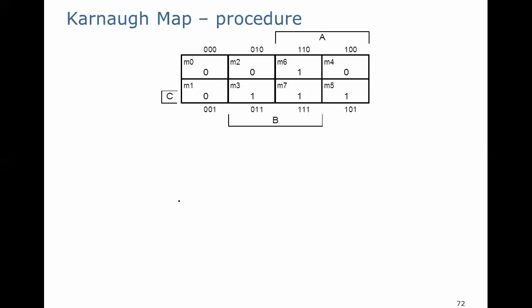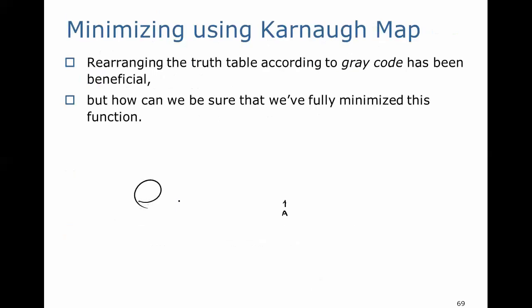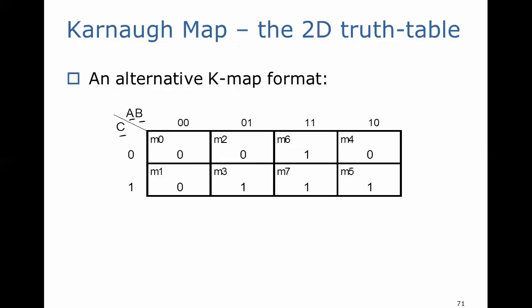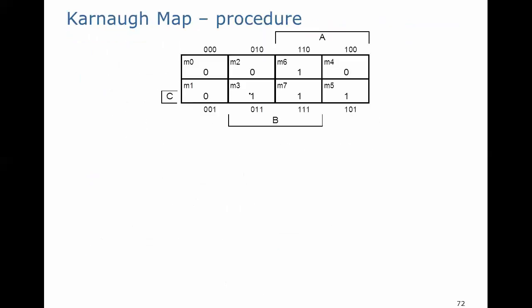Now let's work through this for our particular example. The truth table for this majority vote taker has four true entries: M3, M5, M6, and M7. So we're going to put 1s in the 3, 5, 6, and 7 cells and 0s in the rest. This is really just a truth table laid out in 2D rather than 1D. The key property is that all adjacent cells are neighbors — meaning only one of the inputs A, B, or C changes state as you move to an adjacent cell.